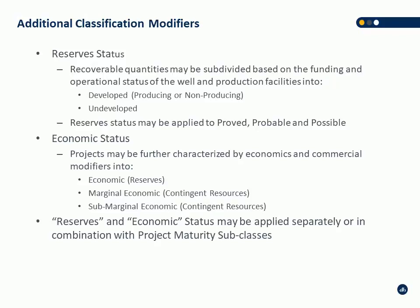There's a slight difference in terminology between PRMS and COGI. PRMS calls contingent resources 'marginal economic' or 'sub-marginal economic,' whereas in COGI it's just called 'economic contingent resources' and 'sub-economic contingent resources' — they mean the exact same thing. Marginal economic means it has positive economics; sub-marginal economic means it's uneconomic. When defining volumes in a report without valuation, you can tie economic status to the project maturity subclasses or break out volumes further — for example, 'economic development pending' or 'sub-economic development pending.'